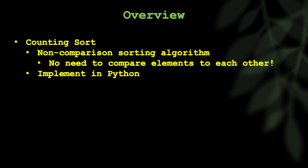Welcome back, everybody. This time we're going to talk about another sorting algorithm, and this will be the last one we discuss before we move on to data structures, which I'll talk a little bit more about at the end of this video. But counting sort is a way to sort a list of numbers without comparing them to each other. And you might think, well, that sounds impossible, but stick around and let's discuss how we might do that.